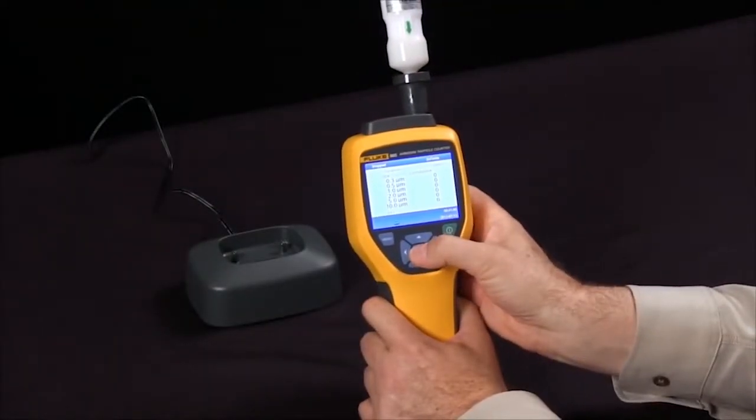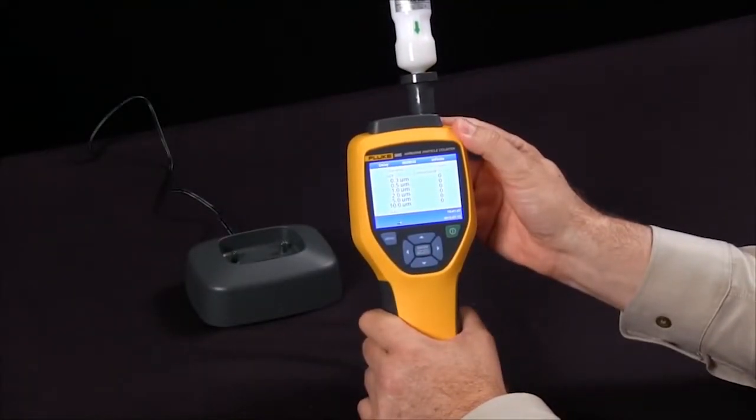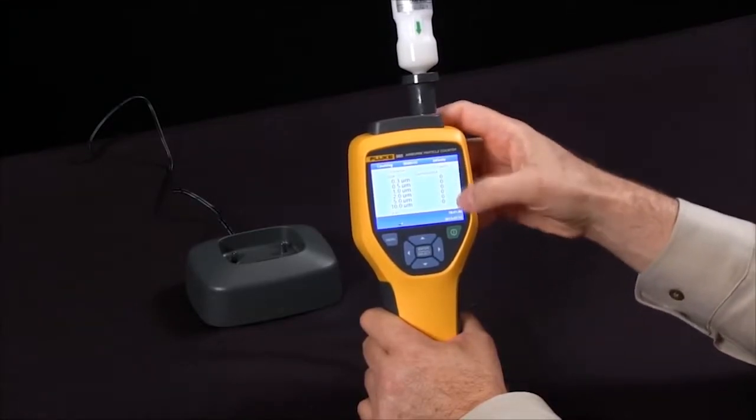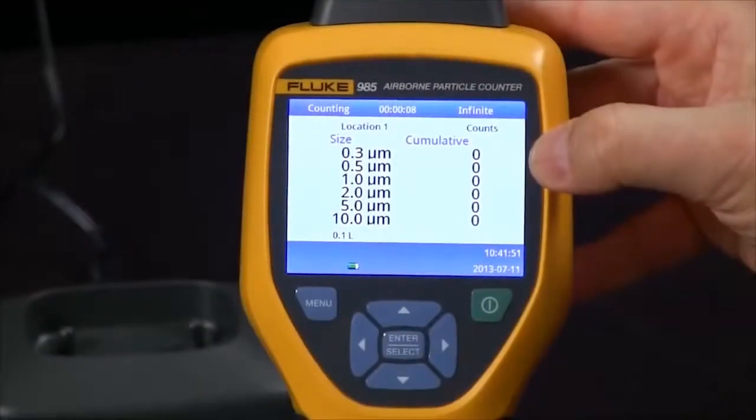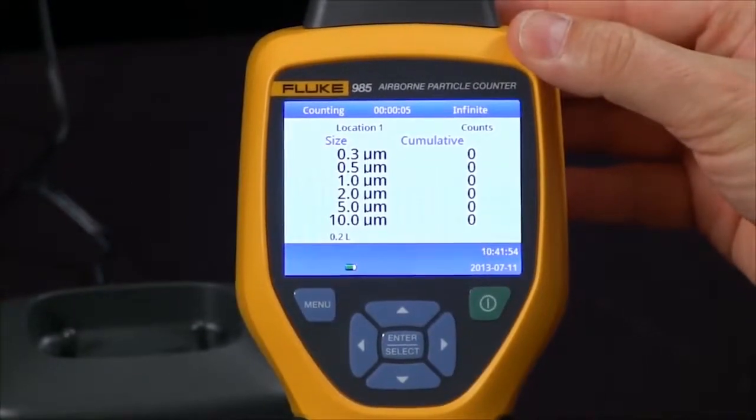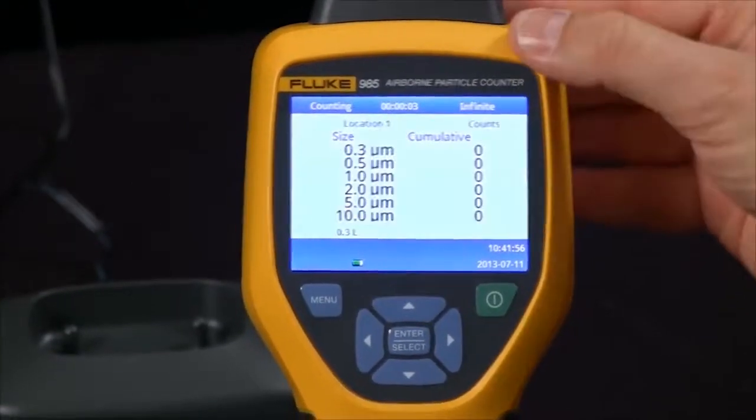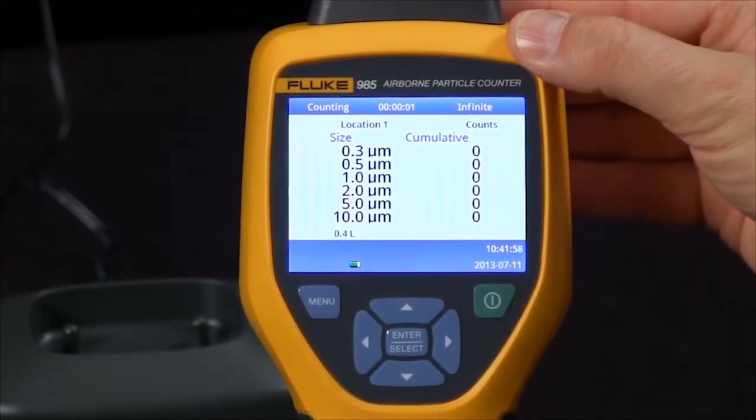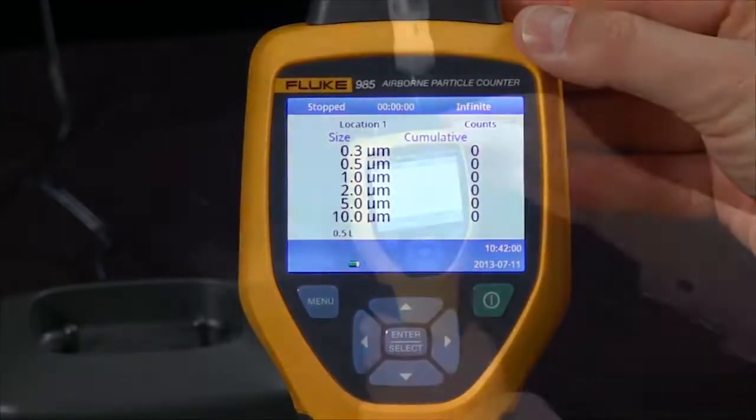Start your sample and if the filter is working properly we should see next to nothing coming through on the particulate counter. I've set this for a 10 second sample size. You can set your sample to be based on time or the volume of air that is passing through the adapter.